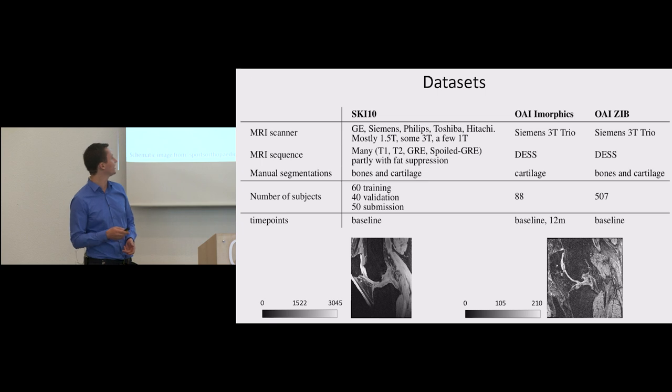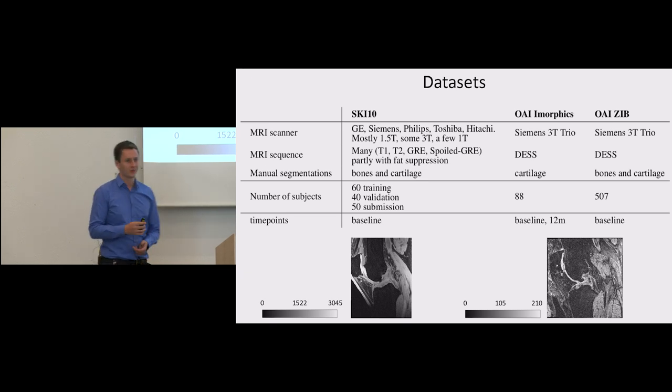It was especially important in 2010 when the SKI10 grand challenge was hosted. This challenge is still kept alive, and you can still submit your segmentations to the website. Data of the SKI10 challenge was acquired using different scanners and different MRI sequences. Manual segmentations were provided for bones and for cartilage and the data is structured into 60 training, 40 validation, and 50 submission files.